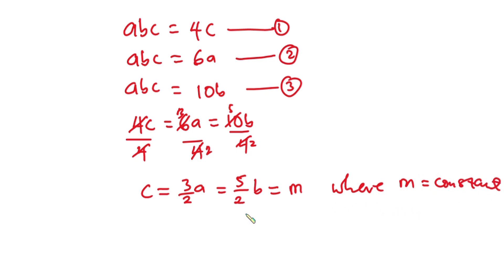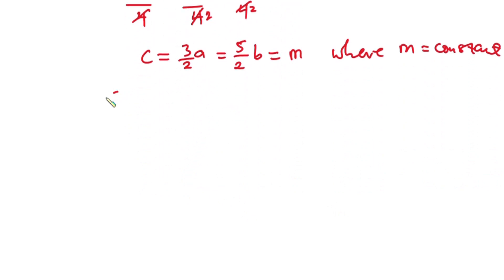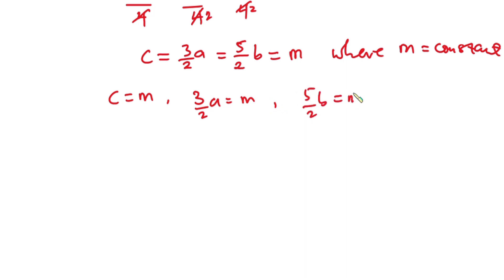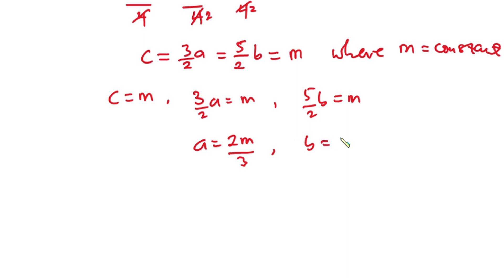Now let's set this equal to m, where m is a constant. From here we can find three equations: c is equal to m, (3/2)a is equal to m, and (5/2)b is equal to m. Making a, b, and c the subject: c is already the subject; a is equal to 2m divided by 3; and b is equal to 2m divided by 5.